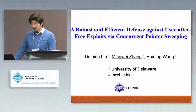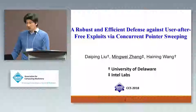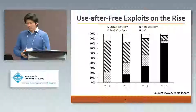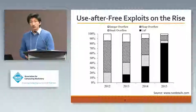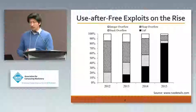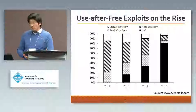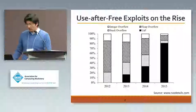The topic of this presentation is a robust and efficient defense against use-after-free exploits via concurrent pointer sweeping. Before we come to the details, let's see a simple chart which shows the soaring number of use-after-free exploits in recent years. We can see that from 2012 to 2015, the number of UAF bugs and exploits rapidly grows.